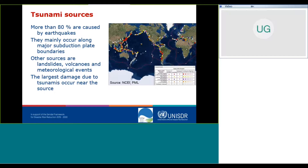Even more complex is our knowledge about other sources, as tsunamis may also be caused by landslides, volcanoes, and meteorological events. As we conduct more research, we see that often these events can also be coupled with different processes occurring at the same time, such as landslides triggered by earthquakes. This is the background for how tsunamis originate.